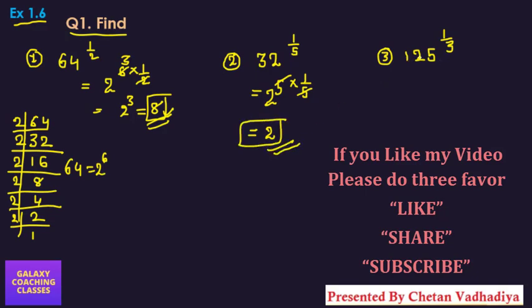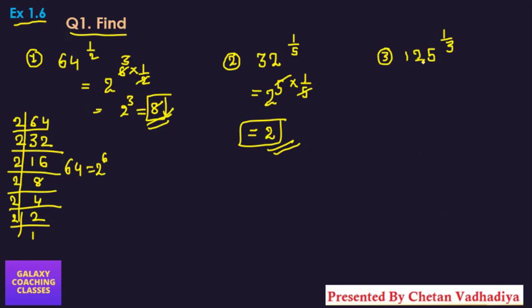Now again 125. So you know the factors of 125 right. Directly 5 into 5 into 5. 5, 5 is 25, 25, 5 is 125. So directly 5 cubed. And again whole raised to power raised to power. So we need to multiply. So this will get cancelled. And your final answer will be 5.